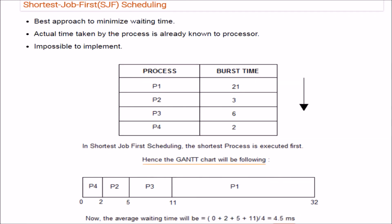Shortest Job First (SJF) means processes in the ready queue are given to the CPU in order of shortest burst time first. However, it is nearly impossible to implement because the CPU would need to know in advance how much time each process will require — which is quite difficult to predict.